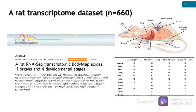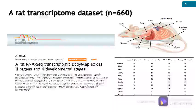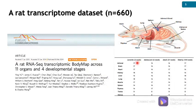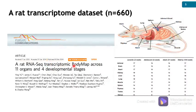This is the rat transcriptome dataset we used in our study. Data was generated by the Sequencing Quality Control Consortium. A total of 660 samples were collected from 32 healthy rats. There were 4 females and 4 males in each organ group with 2 to 4 technical replicates. This table summarizes the sample sizes in each group. The original authors investigated the rat transcriptomic landscape based on the mapped sequencing data. We expanded to explore unmapped reads as well and re-analyzed this dataset using our own pipelines.